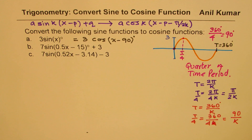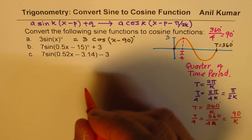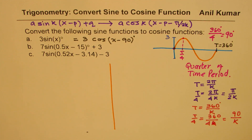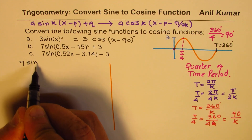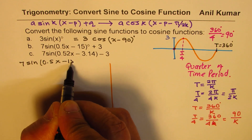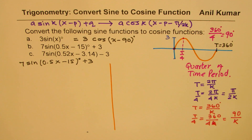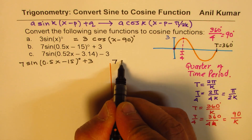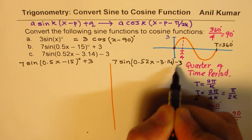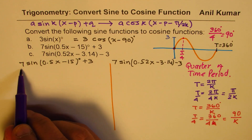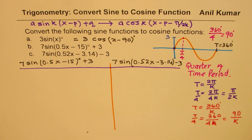With this knowledge, pause the video. We have already done part A — answer part B. I will divide this page into two parts. We have two different equations to work with. The first one is written as 7 sin(0.5x - 15°) + 3. Since amplitude and vertical translation remain the same, only the phase shift changes. The other equation is 7 sin(0.52x - 3.14) - 3. Pause this video and write down the equivalent cosine functions for these two waves.